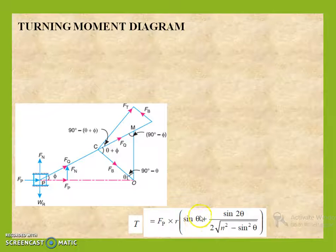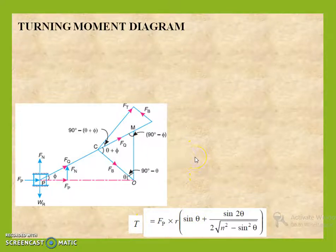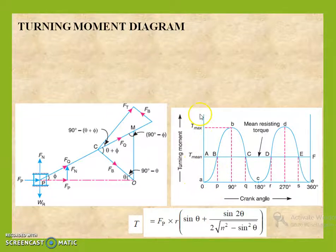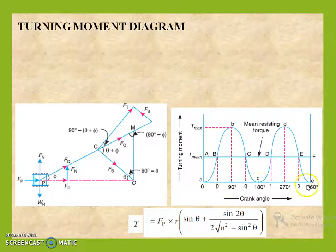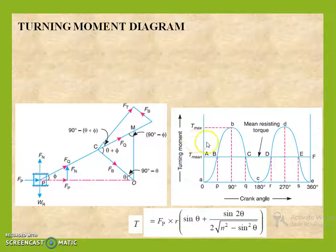When theta equals 0, that is the crank position is at the start, T will be minimum — T will be 0. And when theta equals 90 degrees, this becomes the maximum value. So I can draw a graph with turning moment along the y-axis and crank angle along the x-axis. This is for one revolution, that is 0 to 360 degrees. The curve goes from 0 to maximum value T-max, then comes back to 0, and again moves back to maximum and comes back to 0. This is for the single cylinder double acting engine, and this diagram is known as the turning moment diagram.